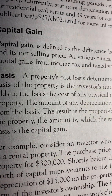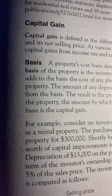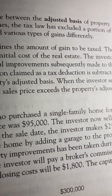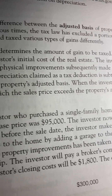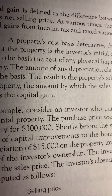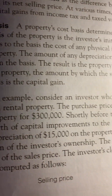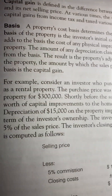A property's cost basis determines the amount of gain to be taxed. The basis of the property is the investor's initial cost of the real estate. The investor adds to the basis the cost of any physical improvements subsequently made to the property. The amount of any depreciation claimed as a tax deduction is subtracted from the basis. The result is the property's adjusted basis. When the investor sells the property, the amount by which the sales price exceeds the property's adjusted basis is the capital gain.